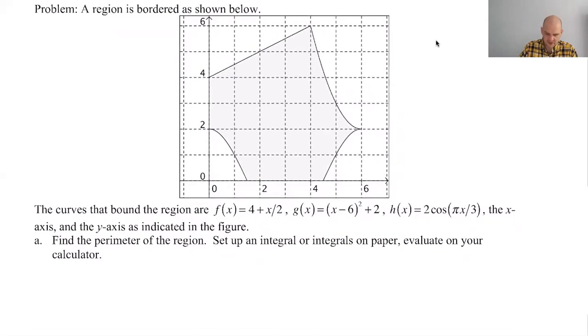So a region is bordered as shown below. The curves that bound the region are like all of those and find the perimeter of the region, set up an integral. I will tell you that when I have my students do this, they pretty routinely forget one of two things. And it's kind of the saddest part. They either forget this or they forget this. You get so hung up on using the arc length formula, but you forget the easy stuff. So don't do that.